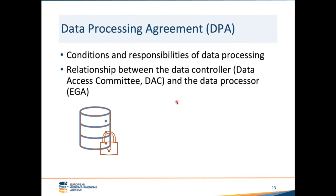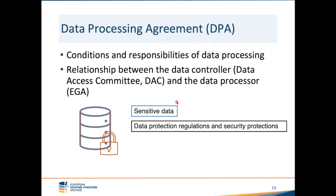The data processing agreement establishes the conditions and responsibilities of data processing — the relationship between the data controller, which is the DAC, and the data processor, which is EGA. By signing this agreement, data controllers can be assured that sensitive data will be handled according to data protection regulations and security protections, preventing unauthorized access to their data.